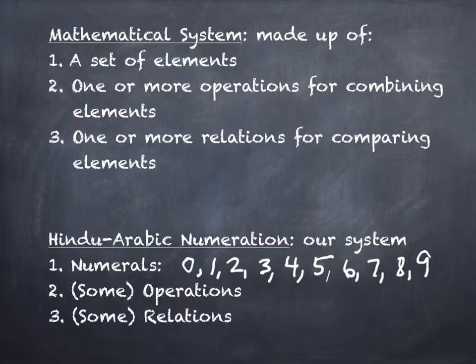So how many numerals do we have? We have ten, but the number ten is not a numeral. It's actually two numerals, a zero and a one. Our numerals are zero through nine, but we have ten different numerals. You have to have a way to combine the elements together. What are some ways that we combine our numerals together? Adding. You betcha. We got addition and subtraction and multiplication and division.